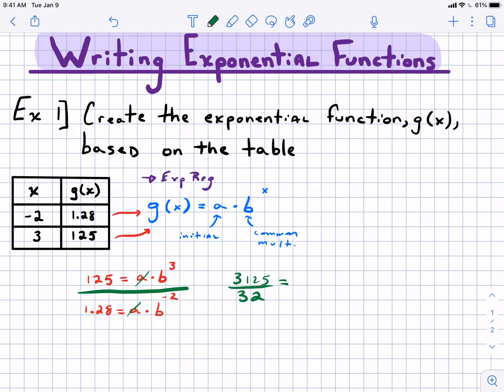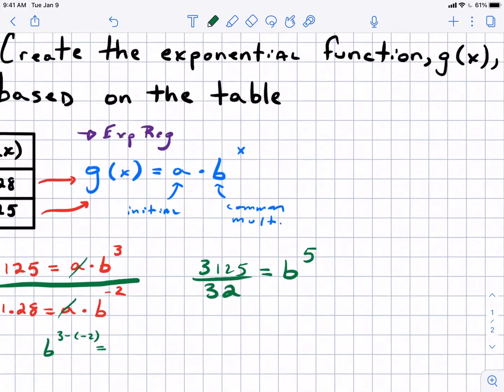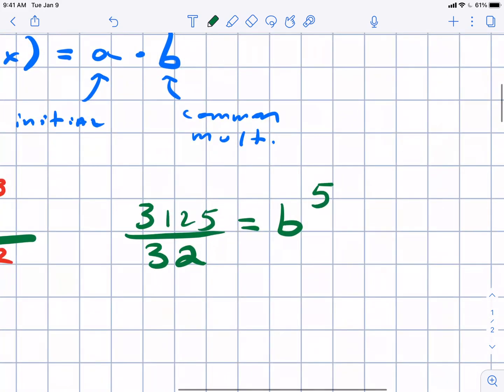Now for b cubed divided by b to the negative second, we're going to use our exponent rules there. We subtract exponents when we divide, which means if we subtract negative two, we're going to get b to the fifth. So we're getting somewhere, we eliminated a. Now how do we solve this?